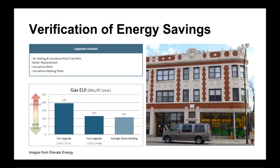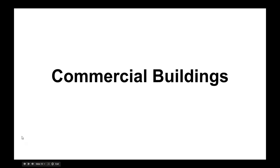You can see we included a comparison to the average steam building, and this building is still a little higher than average for steam buildings in Chicago — maybe because they still don't have great controls over their boiler or didn't do a lot of steam balancing. That shows there's still opportunity to improve efficiency further, even though it went down drastically since they received the upgrades. With that, I'm going to turn it over to Erin, who's going to talk about commercial buildings.